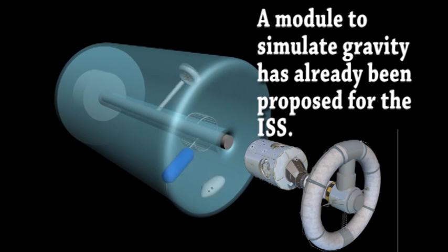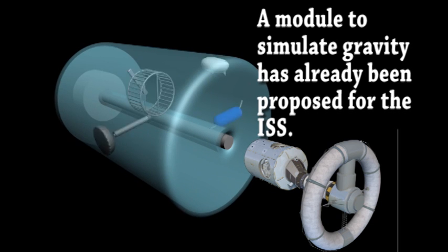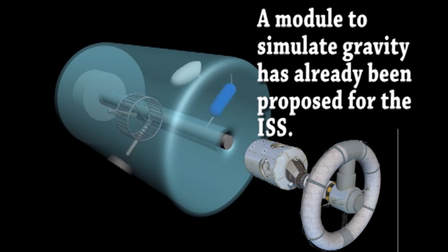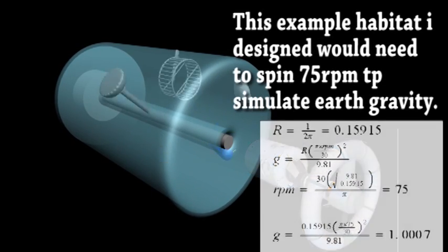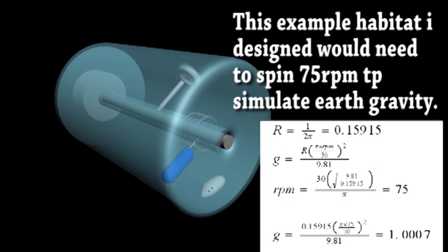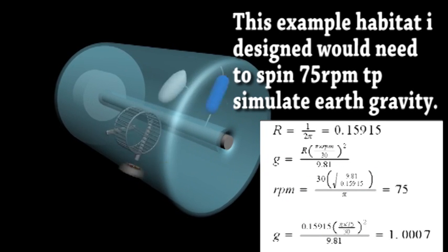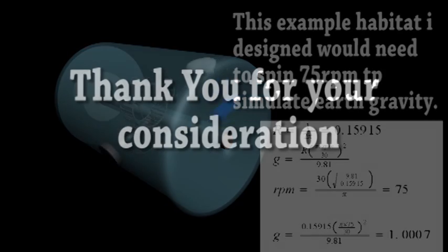But to my knowledge, no experiment has studied what the long-term effects of this might be. What you have been looking at is a crude model of a mouse habitat that would generate artificial gravity, allowing scientists to detect any unforeseen side effects before going large-scale with humans.